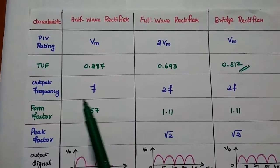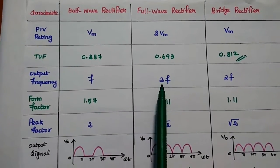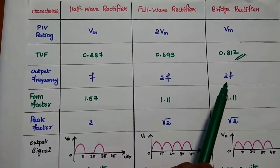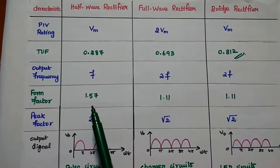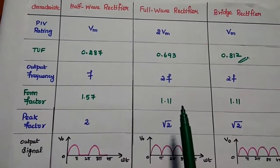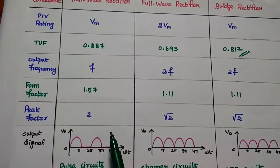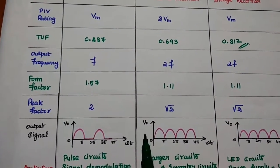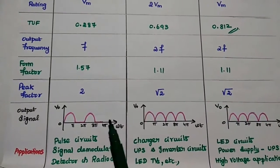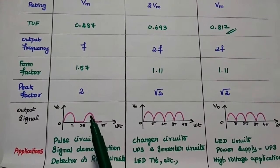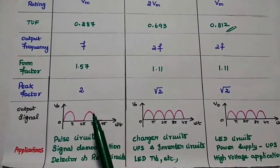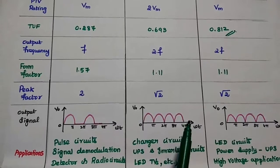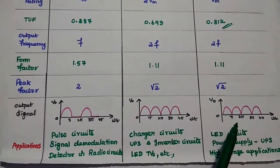Regarding output frequency: for the half wave rectifier it equals the input frequency, while for the full wave and bridge rectifiers it is 2 times the operating frequency. The form factor values are 1.57 for the half wave rectifier, and 1.11 for both the full wave and bridge rectifiers. The peak factor is 2√2 for the half wave rectifier and √2 for the others. In terms of output signal shape, the half wave rectifier conducts only during positive half cycles, while the full wave and bridge rectifiers conduct during both positive and negative half cycles.